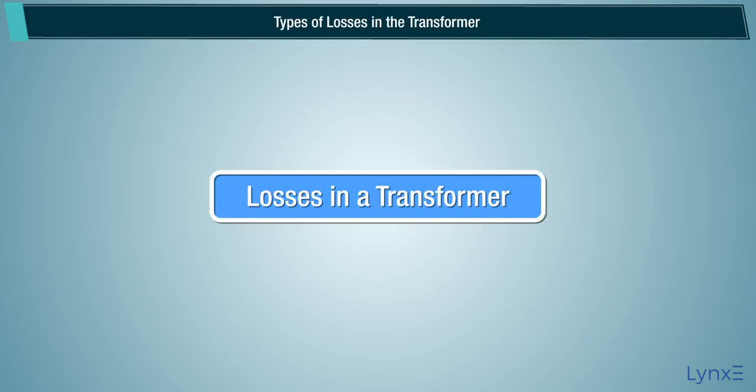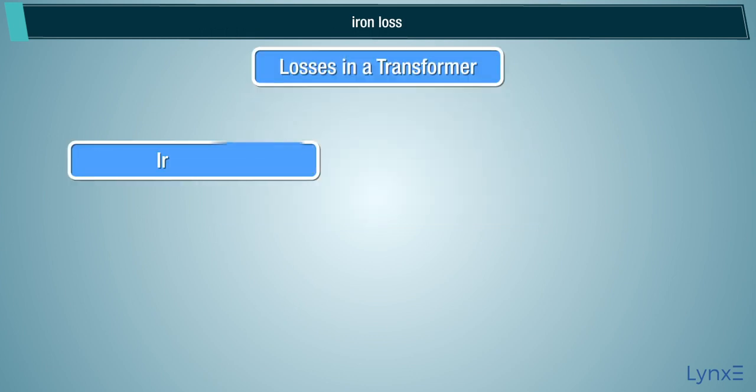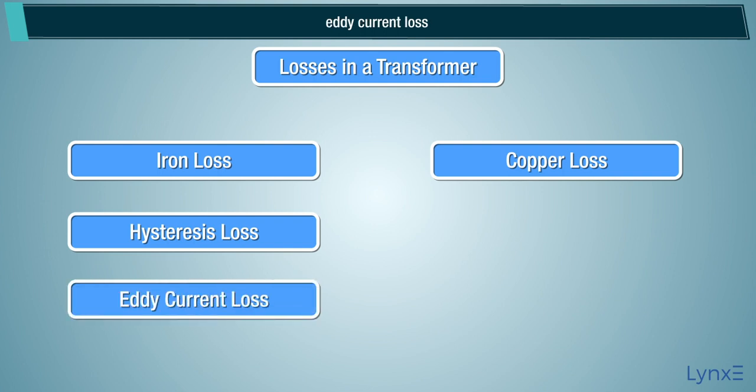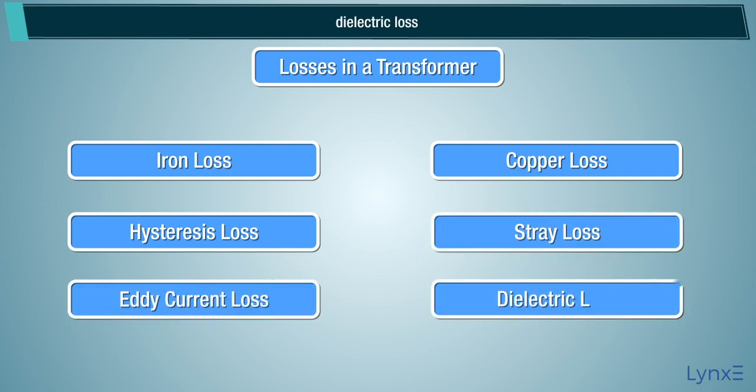Types of losses in a transformer. There are various types of losses in the transformer, such as iron loss, copper loss, hysteresis loss, eddy current loss, stray loss, and dielectric loss.